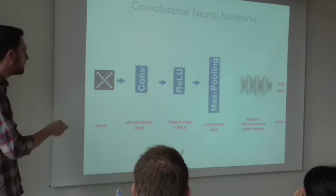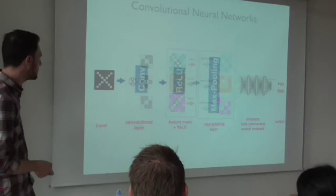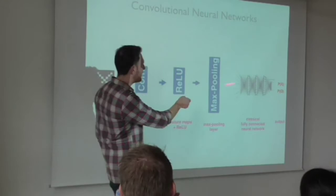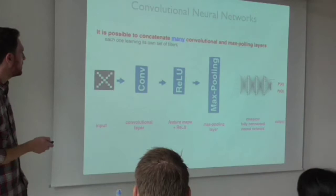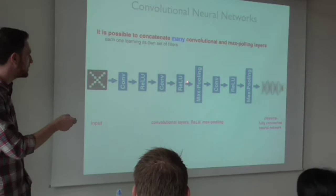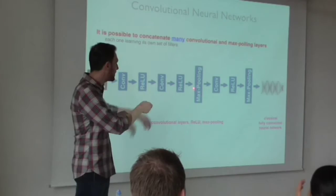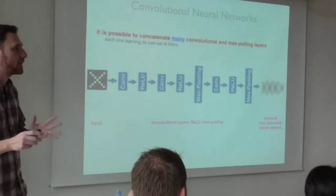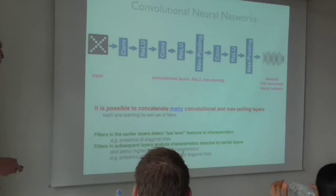Some people use block diagrams instead of drawing the actual filters — you just say there's a convolution followed by an activation, followed by max pooling, then a fully connected layer at the end where you make predictions. You could do convolution, activation, convolution, activation, then max pooling. Why? Because you tried it and it worked better. It's not arbitrary — but you have to try things out to see what happens.